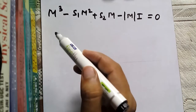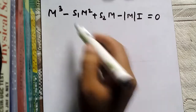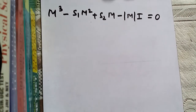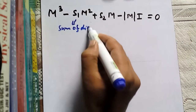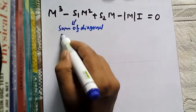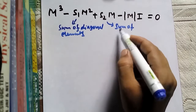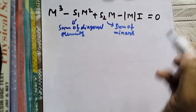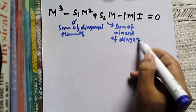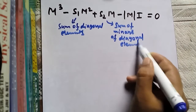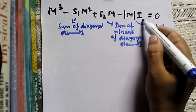Since we have four options, we need to find S1, S2, and det(M). S1 is the trace of the matrix — the sum of diagonal elements. S2 is the sum of minors of the diagonal elements. And det(M) is the determinant of matrix M.